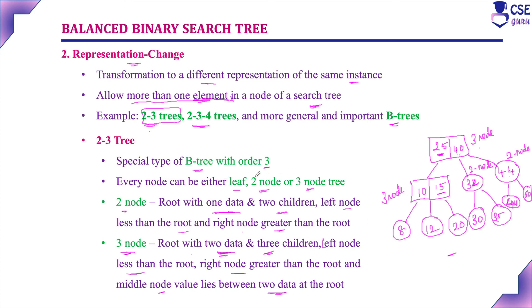This is a B tree with order 3 and every node can be a leaf node, a two-node tree, or a three-node tree. A two-node has a root with one data element and two children — it should be a search tree, so left node is lesser and right node is greater than the root. A three-node tree has root with two data elements and three children: left node lesser than first root element, right node greater than second root element, and middle node lies between the two data elements. This is all about the two-to-three tree, which comes under the representation change category. We are going to discuss AVL tree, red-black tree, and two-to-three tree in detail with examples. Thank you for watching this video.